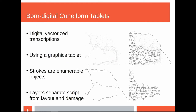Our data set consists of digital vectorized transcriptions. In Heidelberg, we have assyriologists who take cuneiform tablets and transcribe them using vector graphic programs into a digital representation of cuneiform. They use a graphics tablet to do this — they draw on the graphics tablet and create drawings as SVG files. These have many positives: the strokes they take on the graphics tablet are directly enumerable, so we can see where a stroke starts and where a stroke ends. We can also separate layers, so we know which part of the drawing is damaged and which part is the autography — the part where the assyriologist has actually transcribed the tablet.